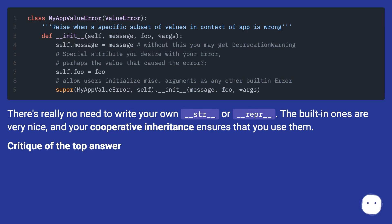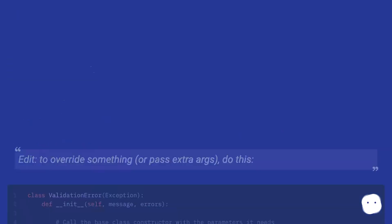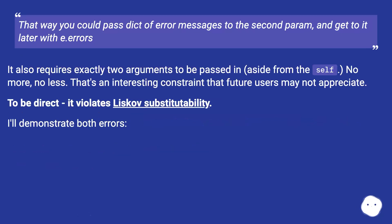Critique of the top answer: maybe I missed the question, but why not just do it simply? Again, the problem with the above is that in order to catch it, you'll either have to name it specifically — importing it if created elsewhere — or catch exception, but you're probably not prepared to handle all types of exceptions, and you should only catch exceptions you are prepared to handle. Additionally, that's not the way to initialize via super, and you'll get a deprecation warning if you access the message attribute. It also requires exactly two arguments to be passed in aside from self — no more, no less. That's an interesting constraint that future users may not appreciate. To be direct, it violates Liskov's substitutability.